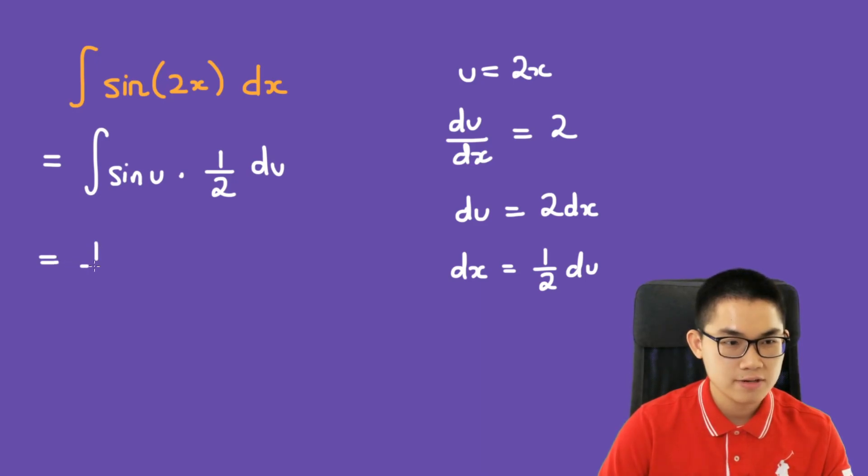We bring the constant out, and we get 1 over 2 times the integral of sine of u du.